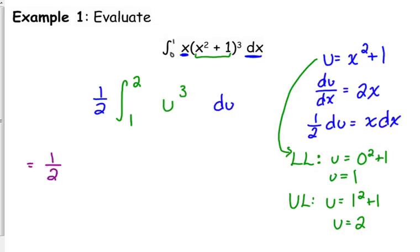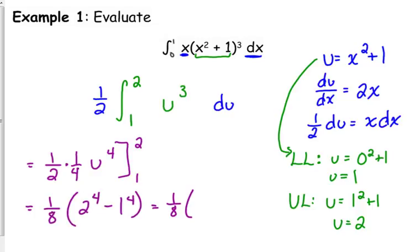So, that one half stays in front. Let's integrate. U cubed is u to the fourth over 4. But, I'm just going to put that 1 fourth in front. U to the fourth. We're integrating from 1 to 2. So, we have 1 eighth times 2 to the fourth minus 1 to the fourth. So, that's 1 eighth times 16 minus 1. So, this answer is 15 over 8.